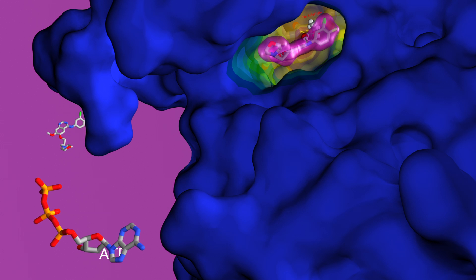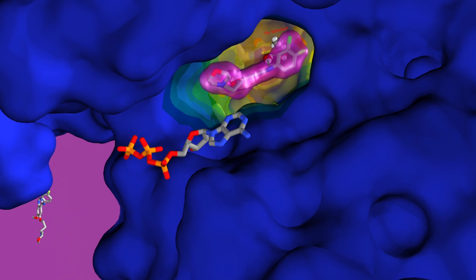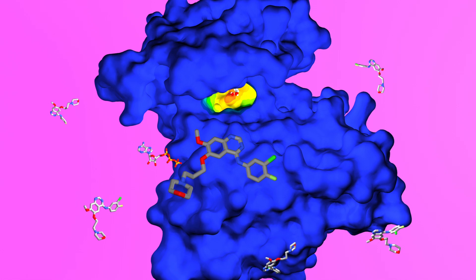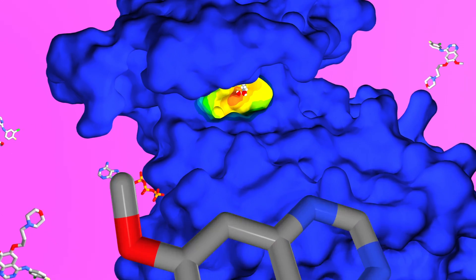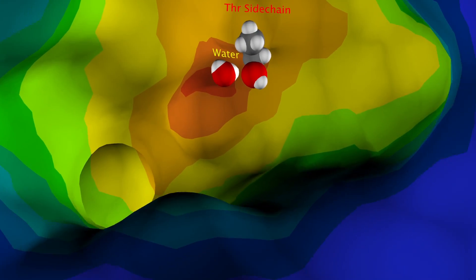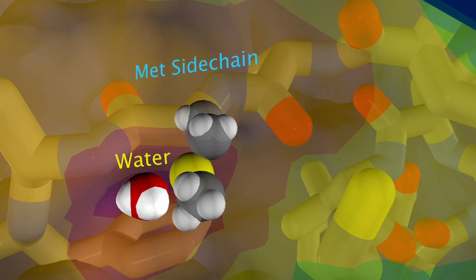This binding prevents the endogenous ATP molecule from binding to the tyrosine kinase domain. In addition to Iressa binding, mutation of an amino acid can occur. Threonine at position 790 where Iressa binds is mutated to methionine.